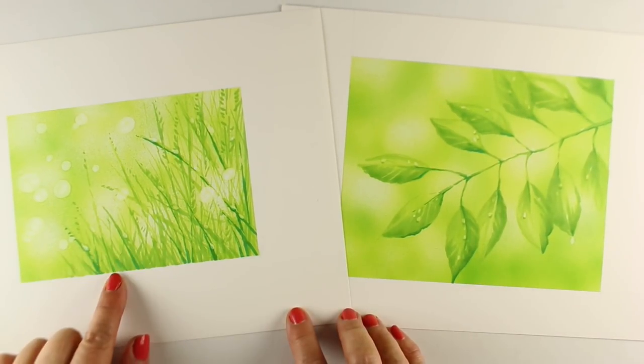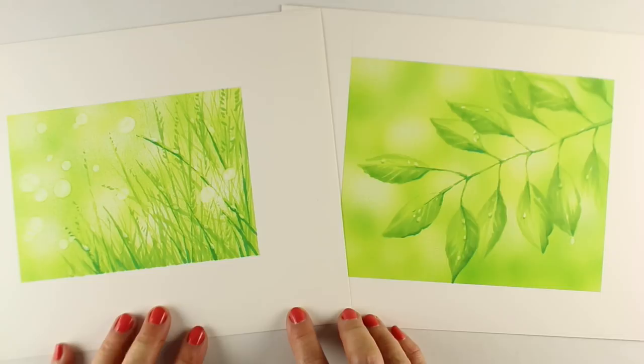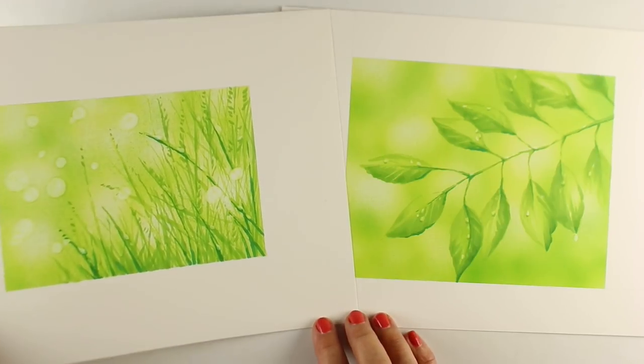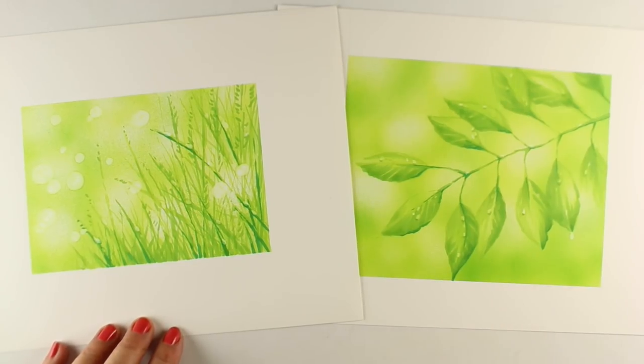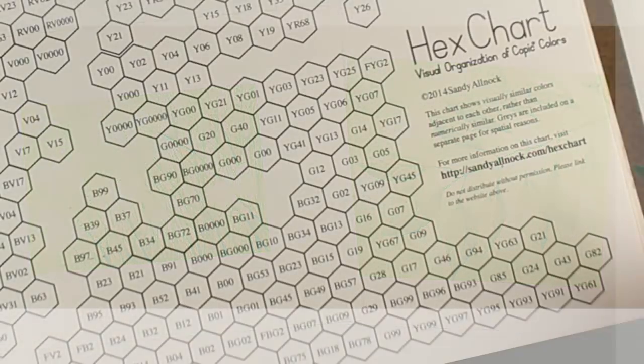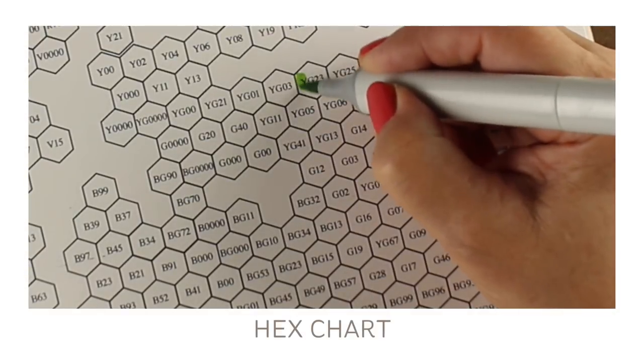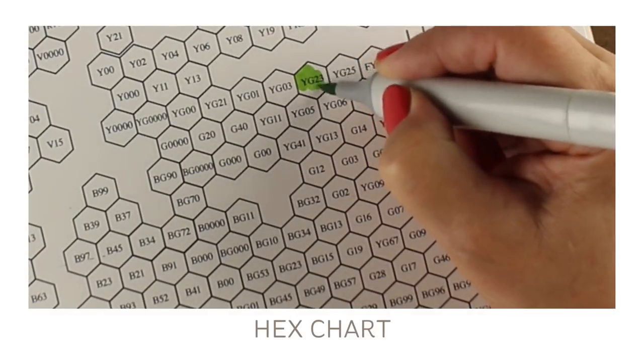On the right is the one you just saw. On the left is the one that has the grasses and I used the colorless blender to add those white dots, which I did not like nearly as much. So I'm glad I learned that on one so that I didn't apply it to the other. Here's the hex chart.